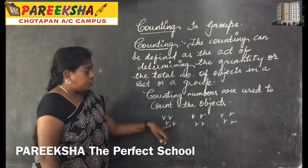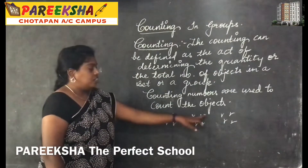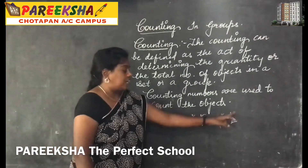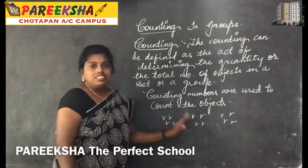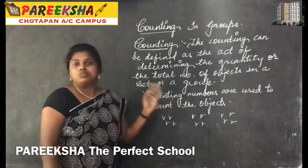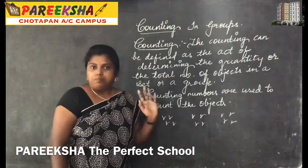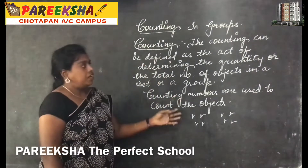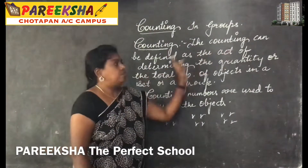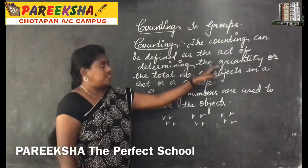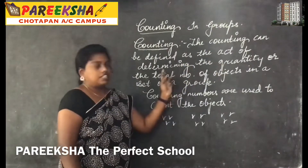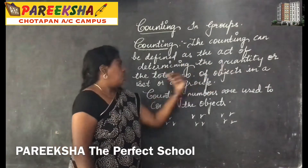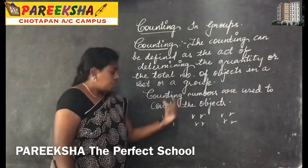Two, three, four, five, six, seven, eight, nine, ten, eleven, twelve. That means in three groups we have twelve birds. The counting can be defined as the act of determining the quantity or the total number of objects.